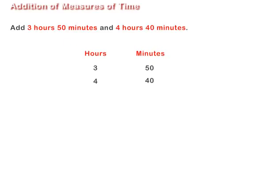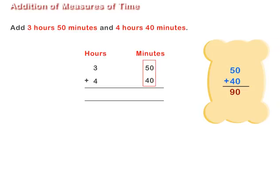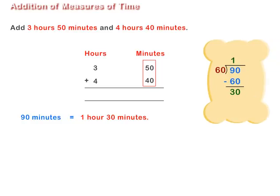Let us add 3 hours 50 minutes and 4 hours 40 minutes. Arrange the measures of time as shown on screen. 50 plus 40 minutes are equal to 90 minutes. Convert 90 minutes into hours and minutes.